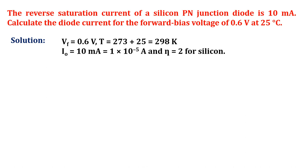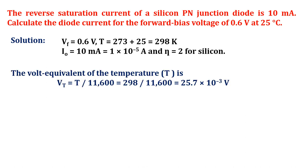The volt equivalent of the temperature T is Vt equals T divided by 11,600. As we know T equals 298, by substituting Vt becomes 25.7 millivolts. By substituting all these values in diode current equation, we will get diode current is 1.174 amps.